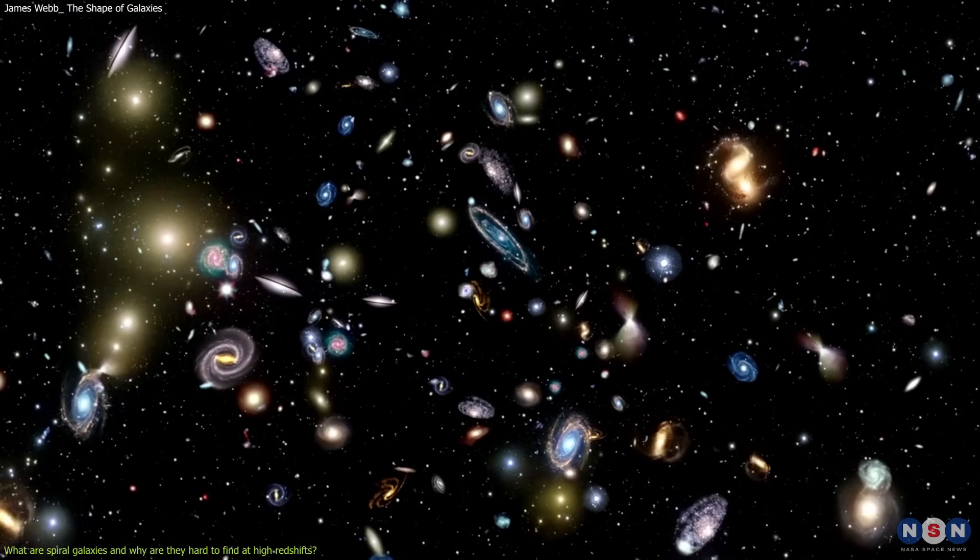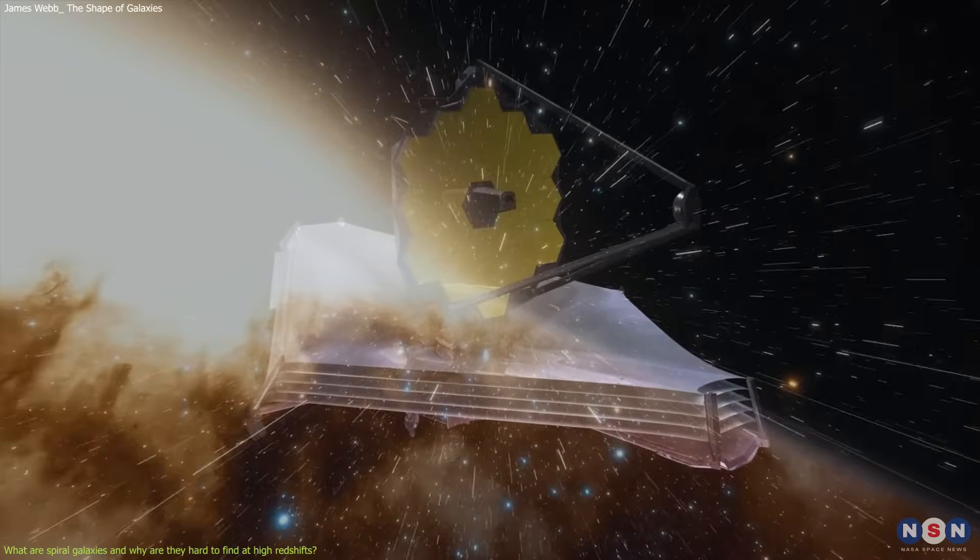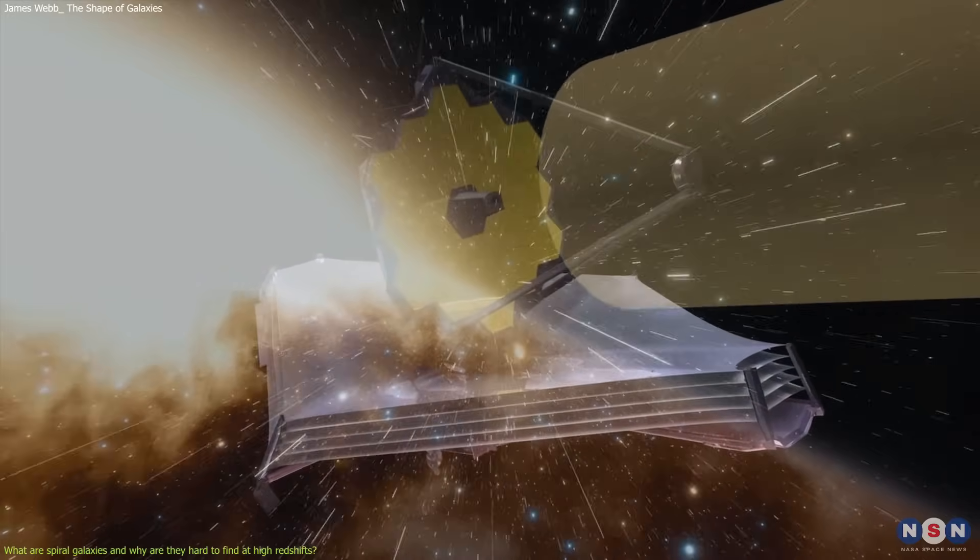But how do we find and identify spiral galaxies in the first place? Well, one way is to use telescopes that can capture images of the light that comes from the galaxies.